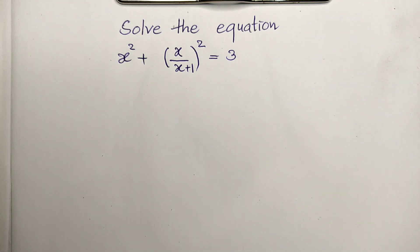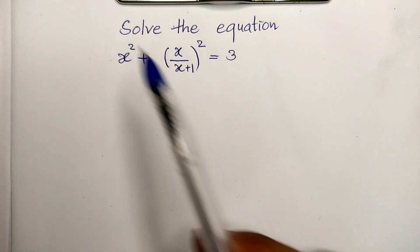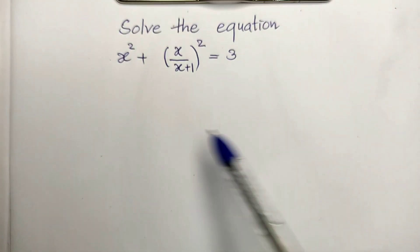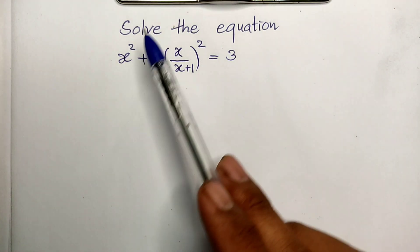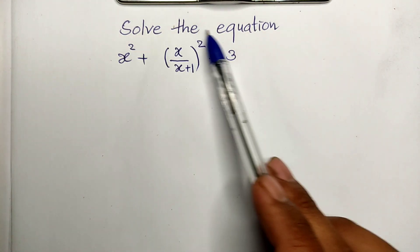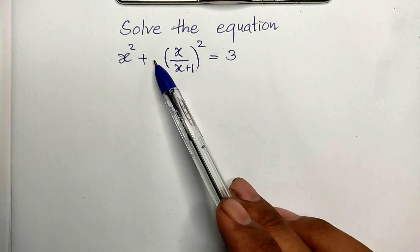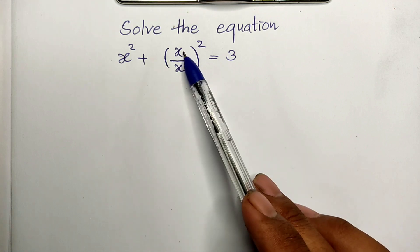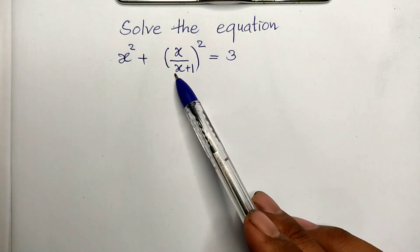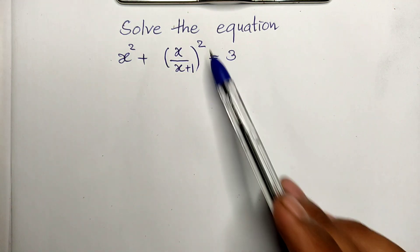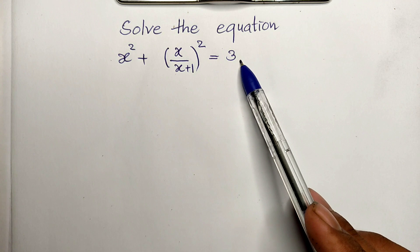Hello everyone. Welcome to my YouTube channel. Today I have one exercise on paper. Solve this equation: h squared plus h divided by (h plus 1), all squared, equals 3.